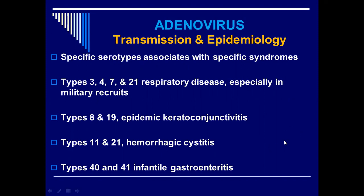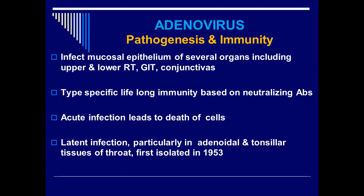Infantile gastroenteritis and respiratory diseases are most common with adenoviruses. They infect the mucosal epithelium of several organs including the upper and lower respiratory tract, gastrointestinal tract, and conjunctivas. In addition to acute infections that can lead to cell death, latent infection is always there — the virus undergoes latency particularly in the adenoidal and tonsillar tissues of the throat.